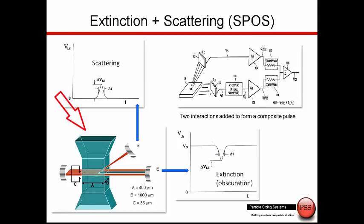In the lower left corner, we see the basic schematic for the measurement zone. There are two sensors: the extinction and the scattering sensor. The extinction sensor is used for larger particles, over about 1.5 microns. These particles pass through the light source and generate a negative pulse, VLE, which is proportional to the size of the particles.